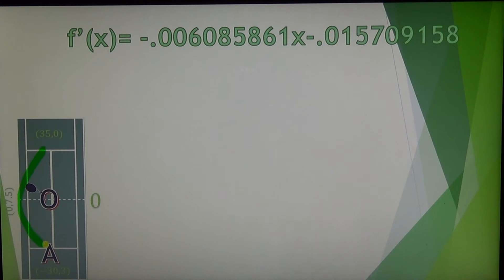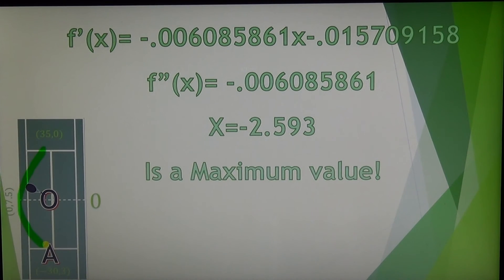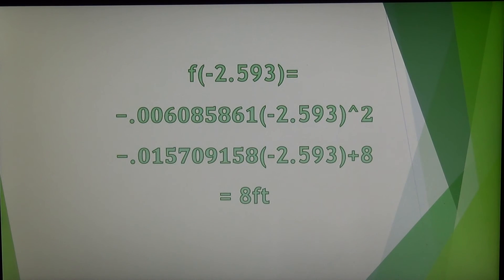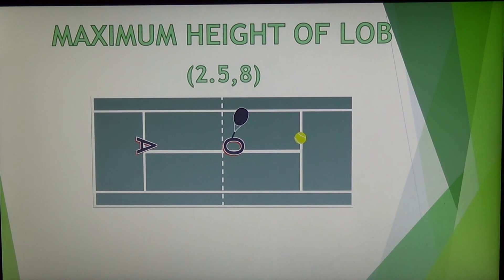To know if the x value is a maximum or minimum, we use the second derivative test to see if the second derivative is negative — which means x would be a maximum — or positive, which means x would be a minimum. Finding our second derivative, f''(x) equals negative 0.006085861, shows us the value is negative, which means our critical value at x equals negative 2.593 is in fact a maximum. Lastly, to find the y value — the height the ball needs to reach 2.593 feet in front of the net to get over my opponent — you plug the x value into the original quadratic equation to get a value of exactly 8 feet. So by using calculus, I have found that in order to lob my opponent's outstretched arm at the net, I need to hit a perfect lob at exactly 8 feet high, about 2.5 feet in front of the net.